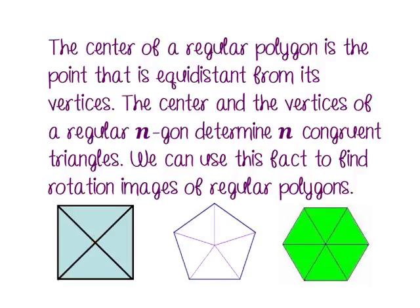The center of a regular polygon is equidistant from its vertices. The center and vertices of a regular n-gon determine n congruent triangles. We can use this fact to find rotation images of regular polygons. Since this regular pentagon has five congruent triangles, we can divide 360 by five to get the degree of rotation.